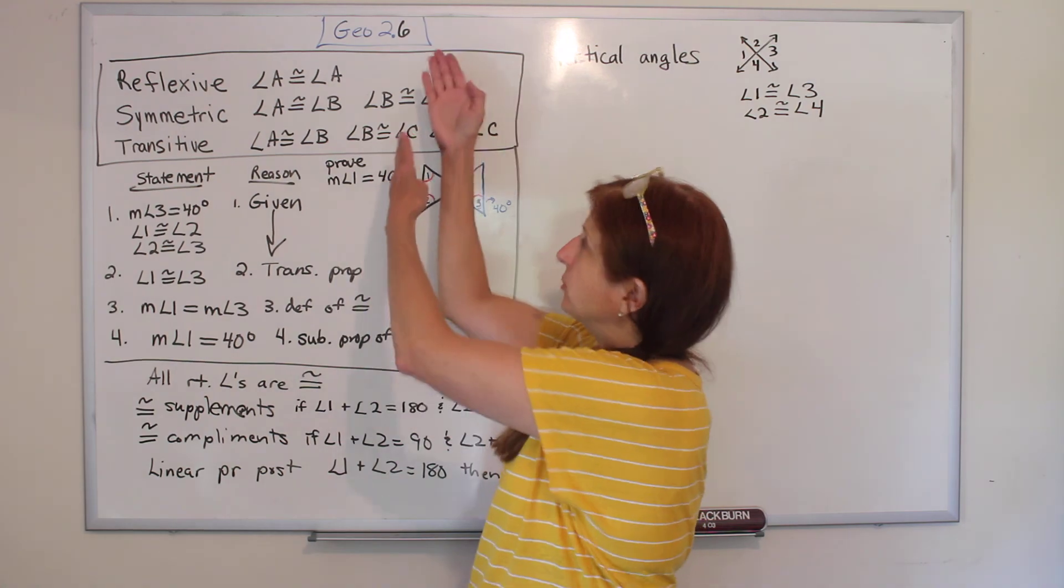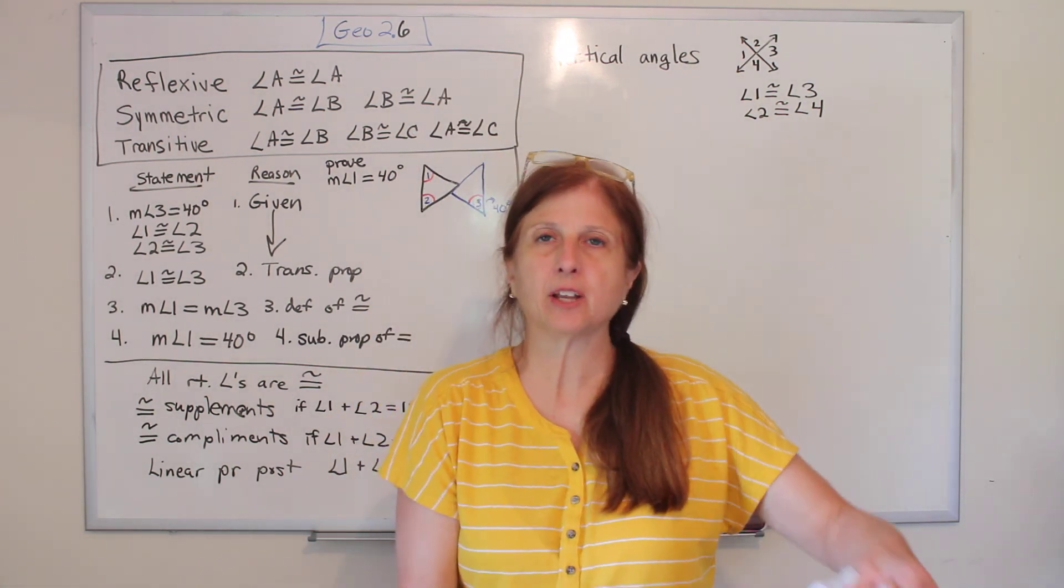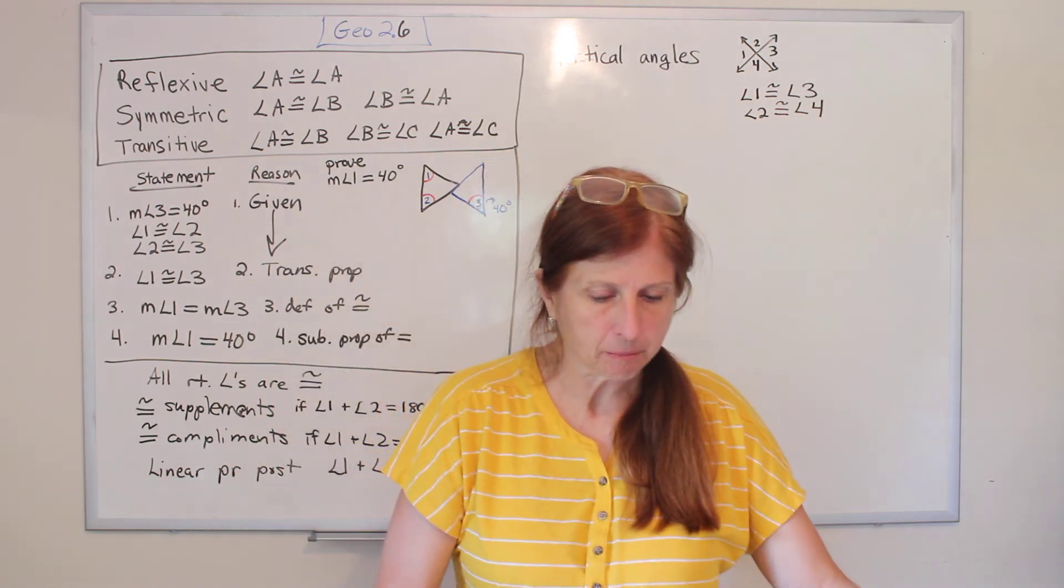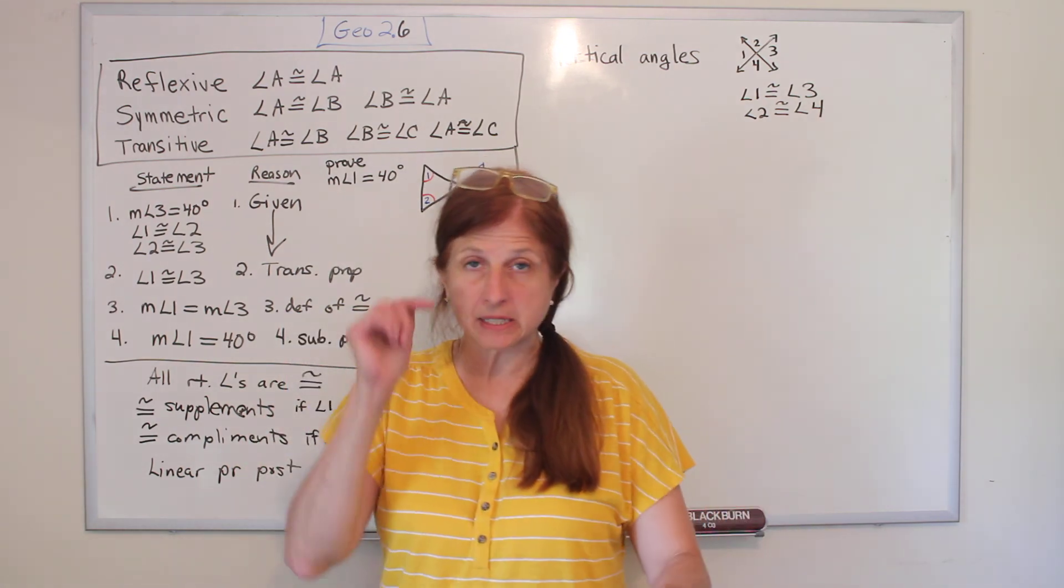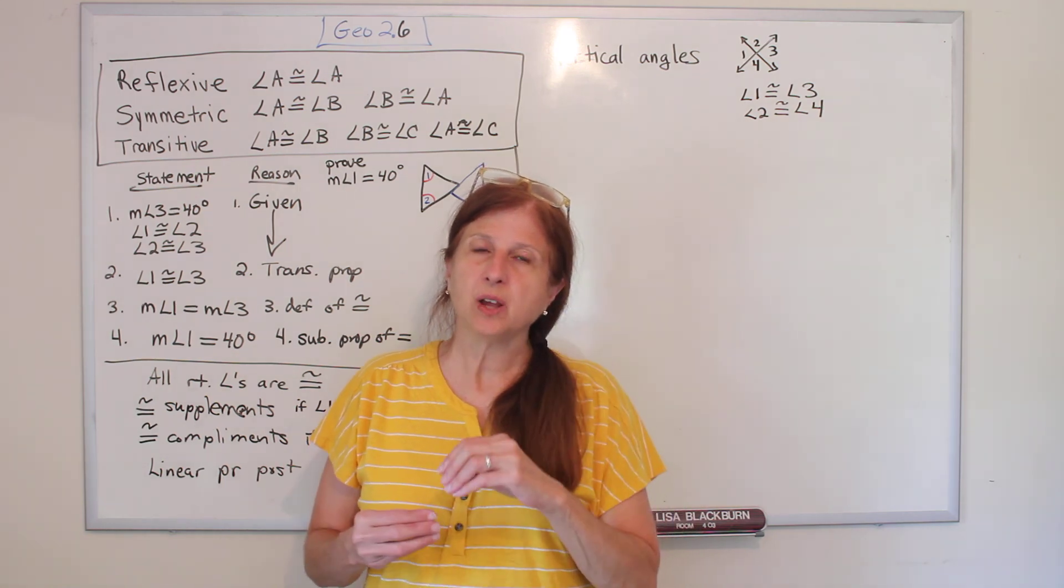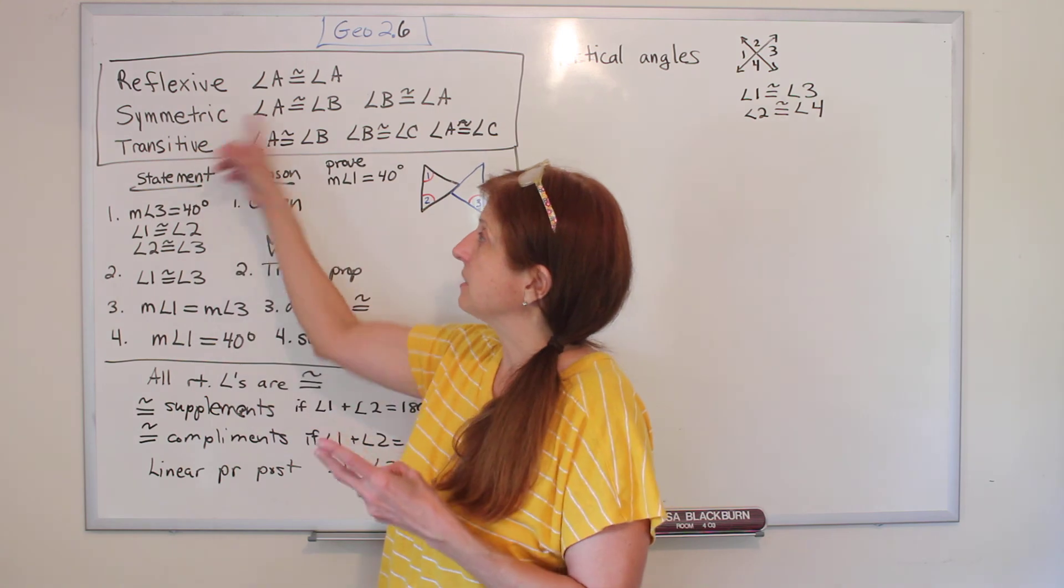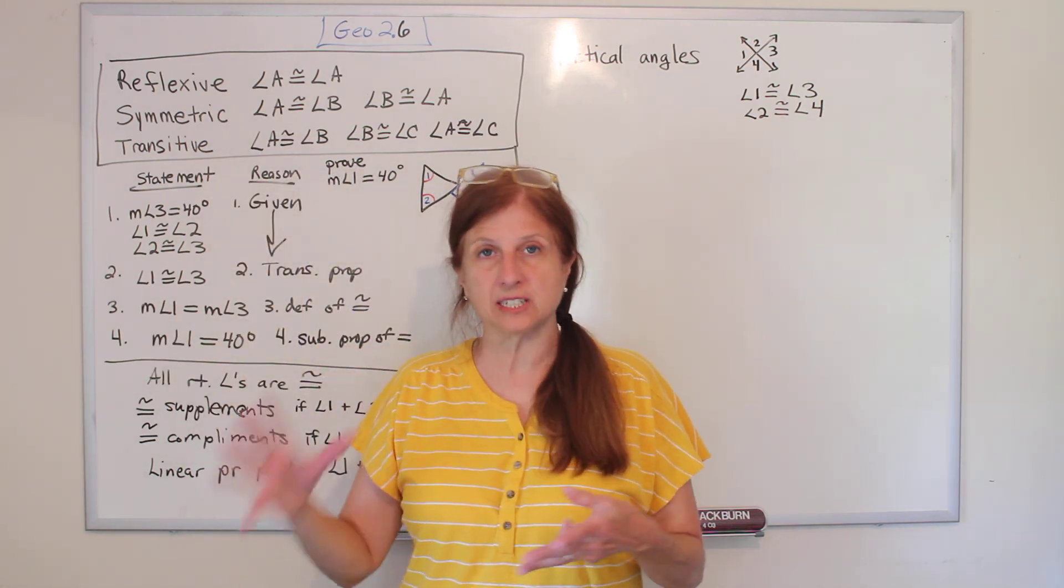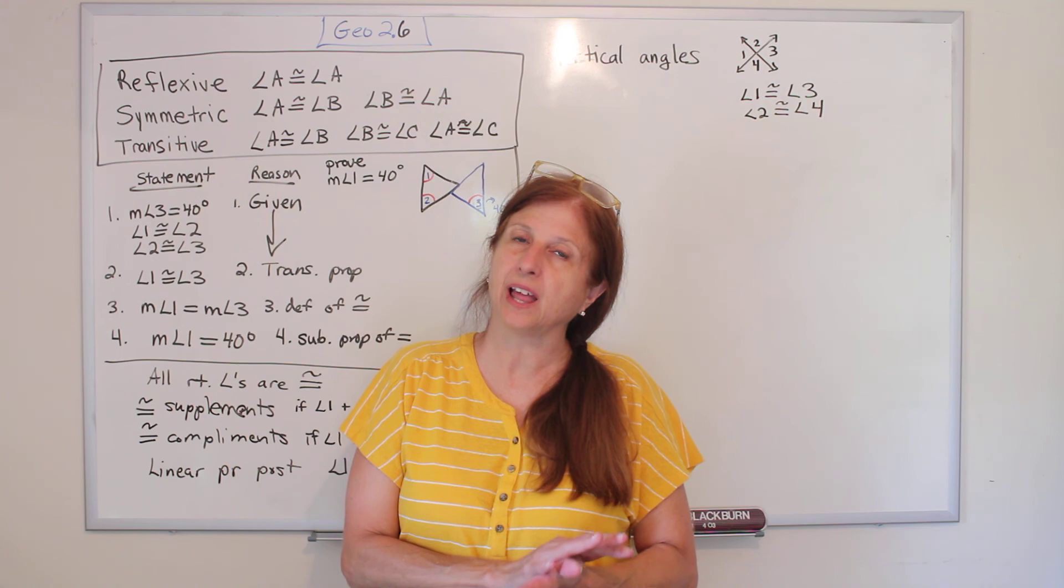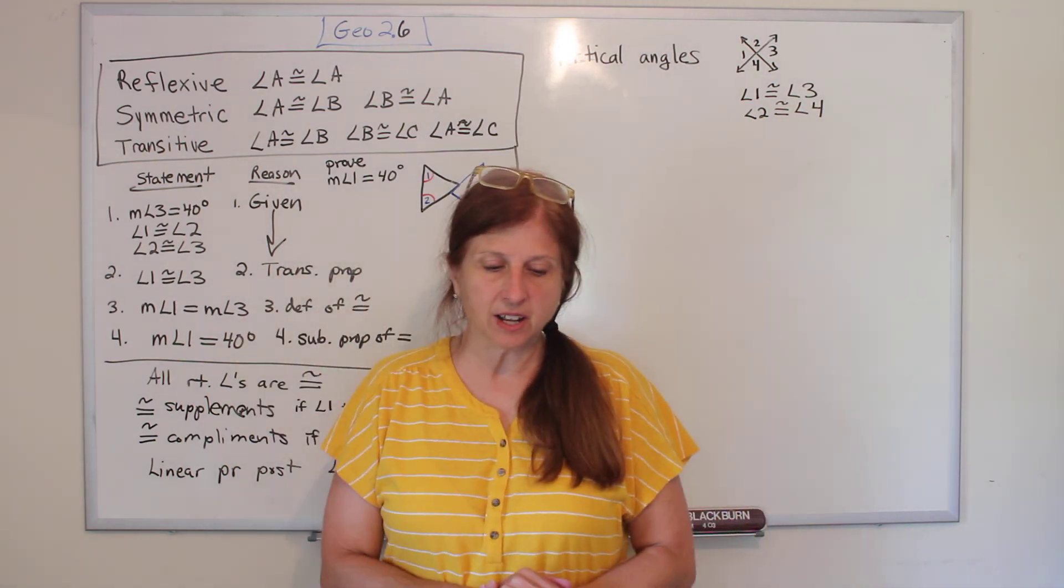Welcome back to Geometry. We're talking about chapter 2.6 in the McDougall-Littell Geometry book, Proving Statements About Angles. So this one's kind of easy because, remember I told you that we were going to learn reflexive, symmetric, transitive, and then apply them to a bunch of situations. We've already applied them to lines, and now we're going to apply them to angles. So, not too hard.